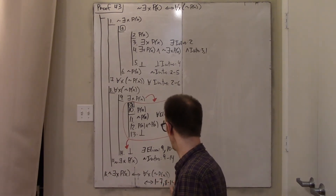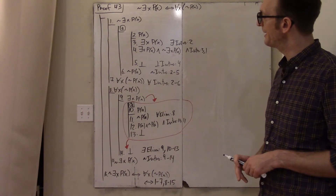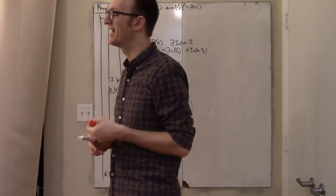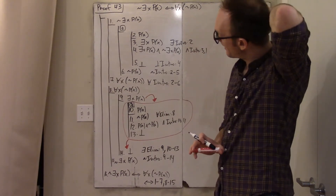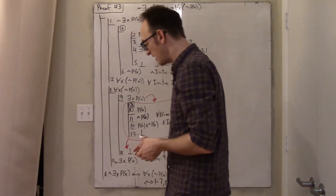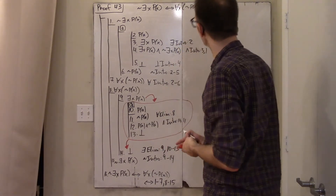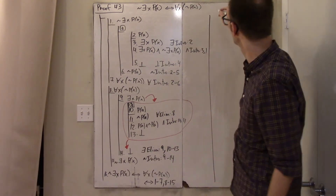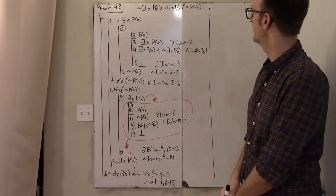Let's dwell on this to understand why we call these De Morgan laws. They're the infinite version of the finite De Morgan laws. I'm going to redo this entire proof to show some symmetry, comparing it to the propositional case. If you're tired of this, feel free to skip ahead.